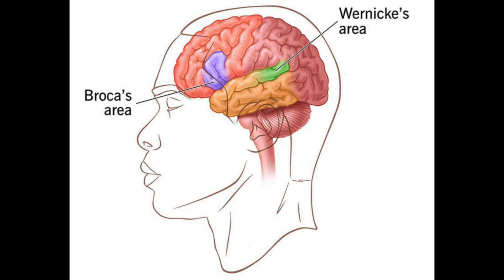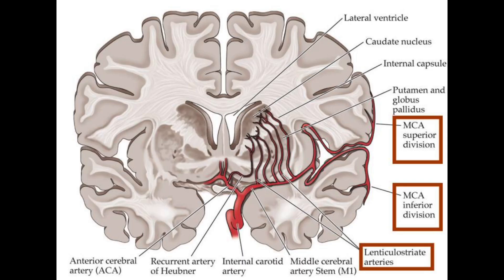More specifically, Broca's aphasia for infarcts in the superior division and Wernicke's aphasia for infarcts in the inferior division. MCA infarcts occur in three basic regions: superior, inferior, and deep territory.